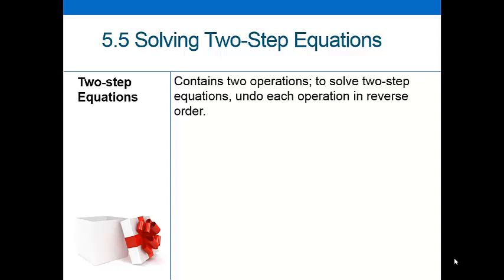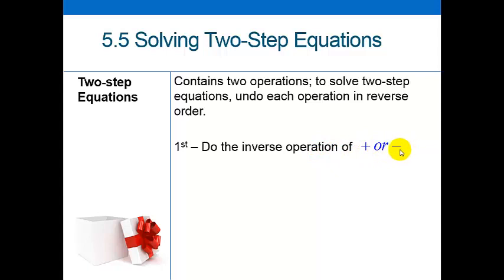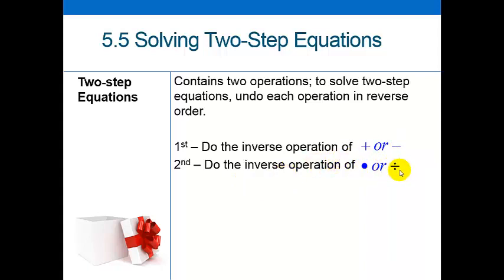In 5.5 we're going to be looking into solving two step equations. 5.3 and 5.4 dealt with one step equations, so this is a little bit more challenging and you're going to have to make sure you're familiar with your integer rules. Just like the word two step, there's two operations that you have to undo in order to get to your variable. The first thing you need to do is the inverse operation of any addition or subtraction, and then the second thing is the inverse operation of multiplication or division.